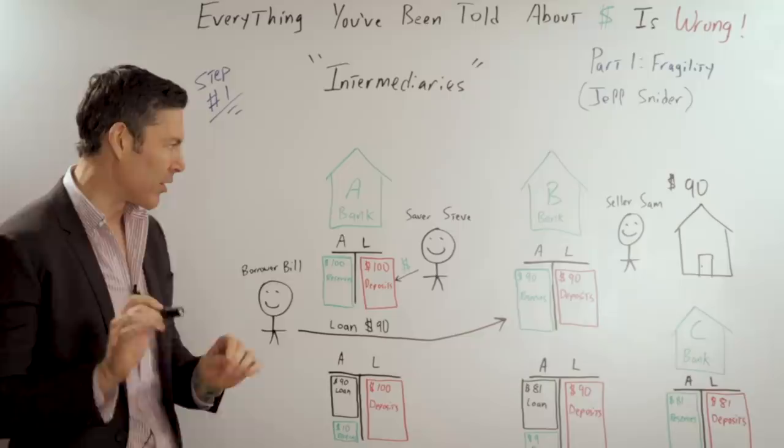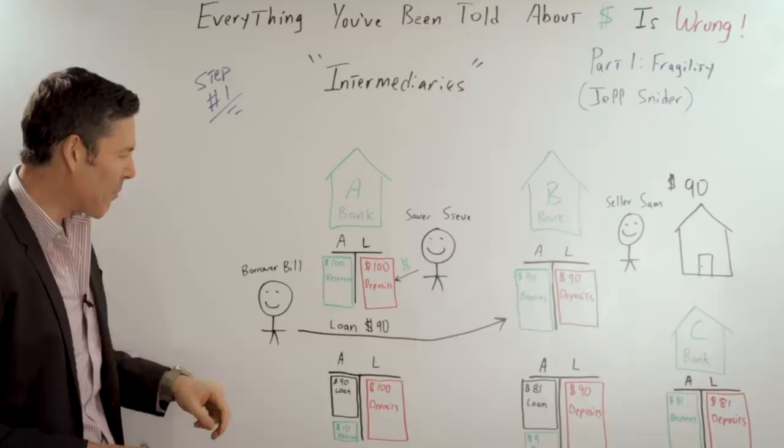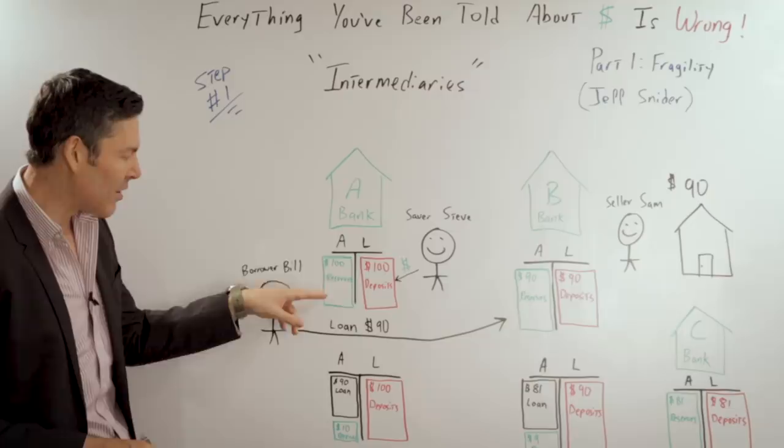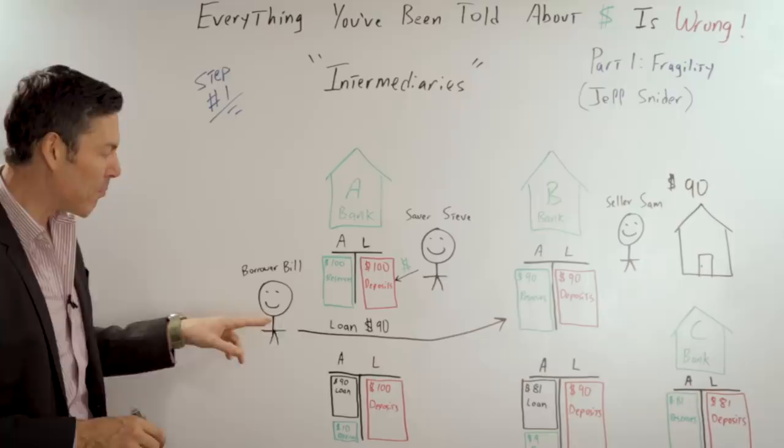Bank A is right here and Saver Steve saved up 100 bucks and he deposited that in his bank and the bank has $100 in deposit. That is a liability on their balance sheet. They owe that to Saver Steve. Those hundred dollars becomes an asset in reserves that the bank can then lend out. If we have a 10% reserve requirement, borrower Bill can come along and borrow $90.